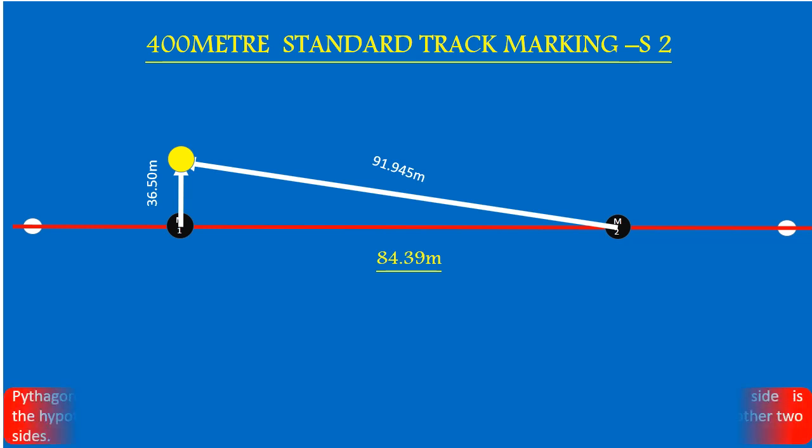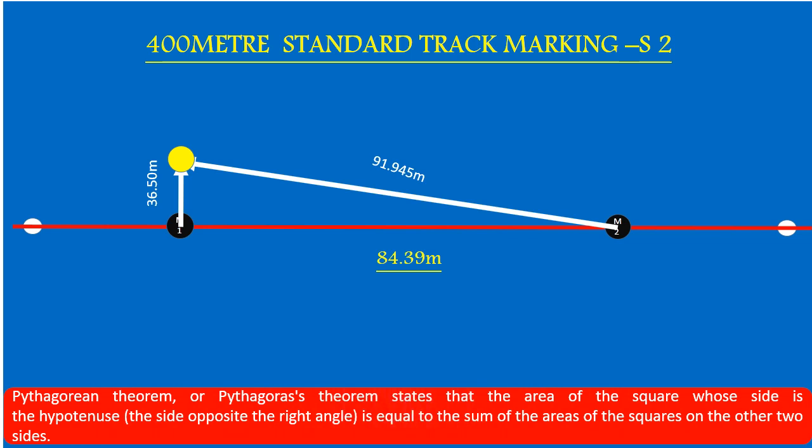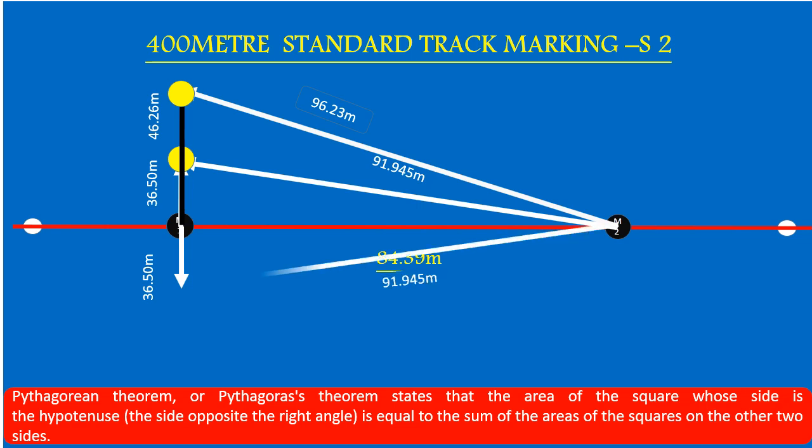This is Pythagoras theorem. Again mark 46.26 meter on arc that includes 36.50 meters plus 8 lanes with 9.76 meters from M1. Then mark 96.23 meters on arc diagonally from M2. Spot the point where the two arcs connect. The same marking has to be done downward from the track horizontal divide line M1. Now we have to mark the same from M2 and M1 as what we did earlier.